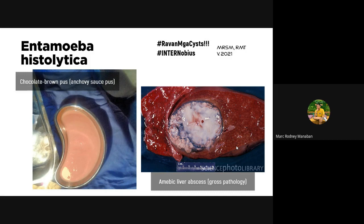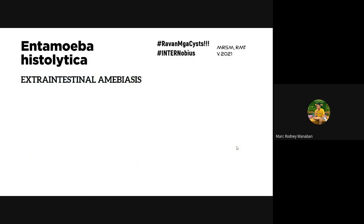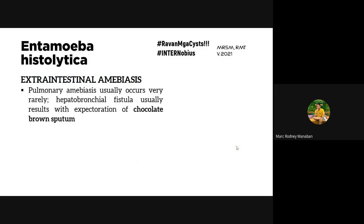Other sites of extra-intestinal amoebiasis include pulmonary amoebiasis — spreading from the liver to the lungs through portal/blood circulation. The characteristic sputum is chocolate brown, similar to the liver abscess pus. CNS involvement leads to secondary amoebic meningoencephalitis, while Naegleria fowleri causes primary amoebic meningoencephalitis.